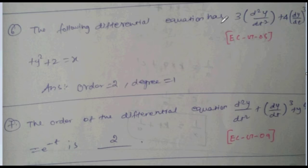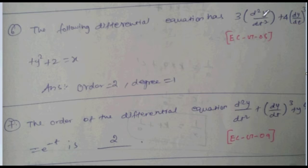The following differential equation: d²y/dt² plus 4(dy/dt)^q plus y² plus 2 equal to x. Order is 2. Higher order degree is 1, so order 2, degree 1.